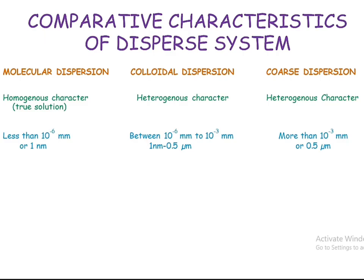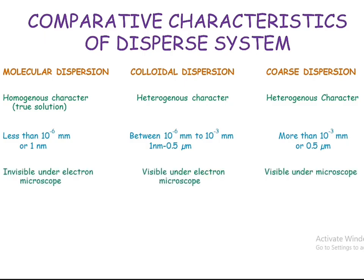On the basis of size, molecular dispersions have a size less than 10⁻⁶ mm, or 1 nanometer. Colloidal dispersions have a size between 10⁻⁶ mm and 10⁻³ mm, that is, 1 nanometer to 0.5 micrometers. Coarse dispersions are larger than colloidal dispersions — more than 0.5 micrometers.